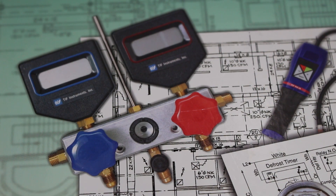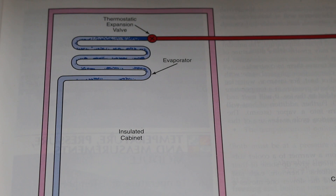Latent heat is the change of state of a solid, liquid, or vapor without the change of temperature. For example, at around the midpoint of our evaporator, our refrigerant boils and changes state from a liquid into a vapor. This change of state is called latent heat — latent heat of evaporization.